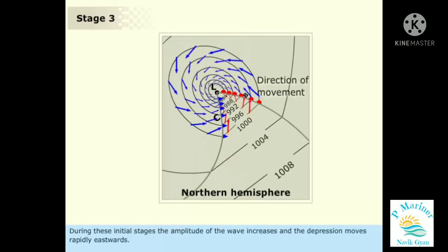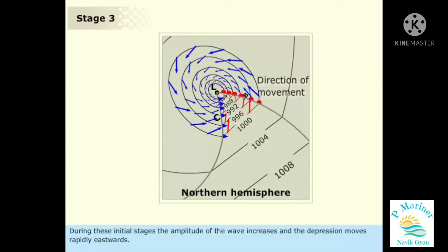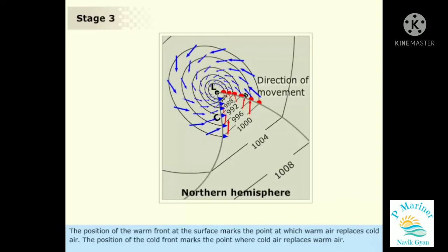During these initial stages, the amplitude of the wave increases and the depression moves rapidly eastwards, in a direction parallel to the isobars of the warm sector, sometimes at speeds over 40 knots. The position of the warm front at the surface marks the point at which warm air replaces cold air. The position of the cold front marks the point where cold air replaces warm air.